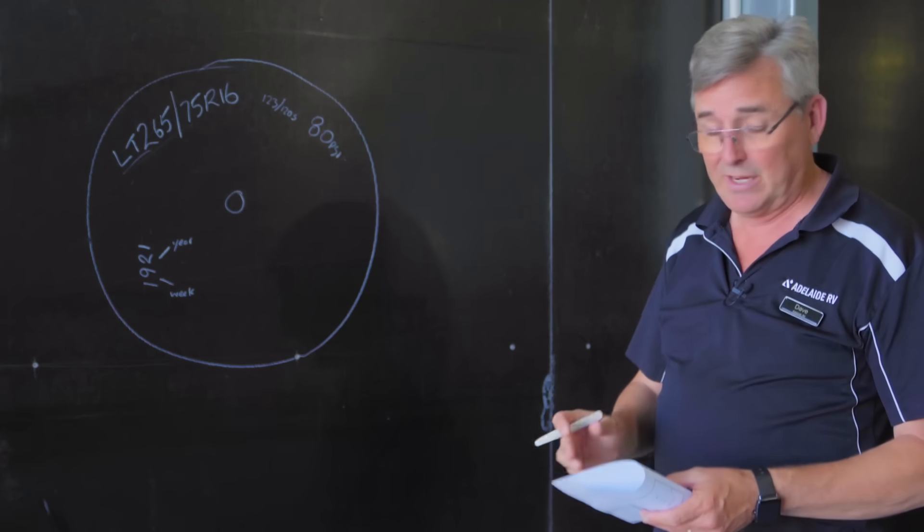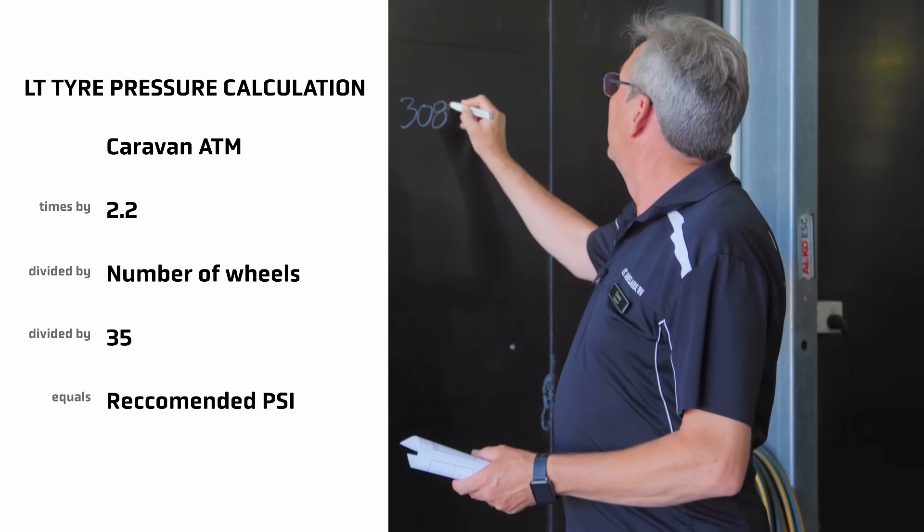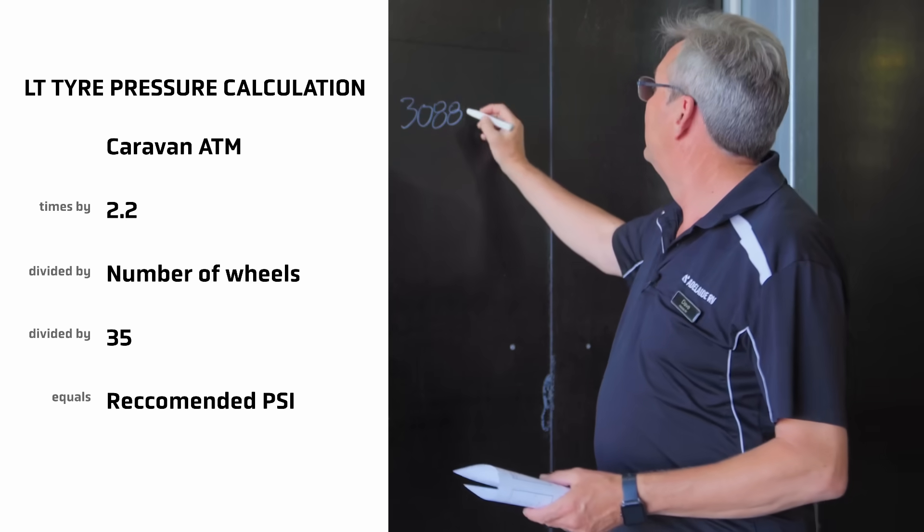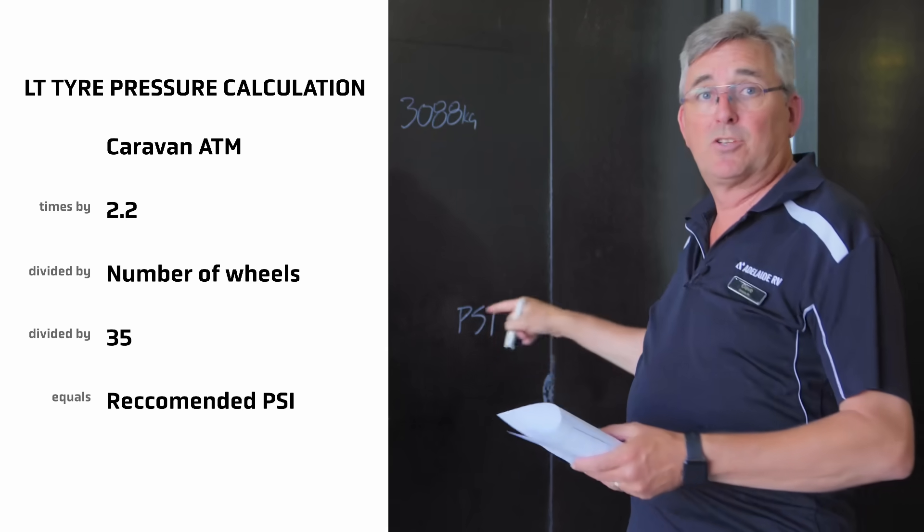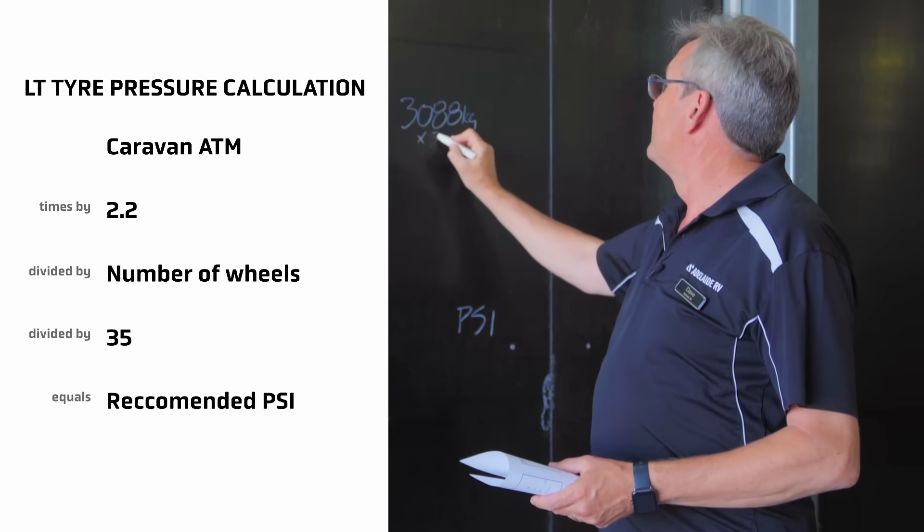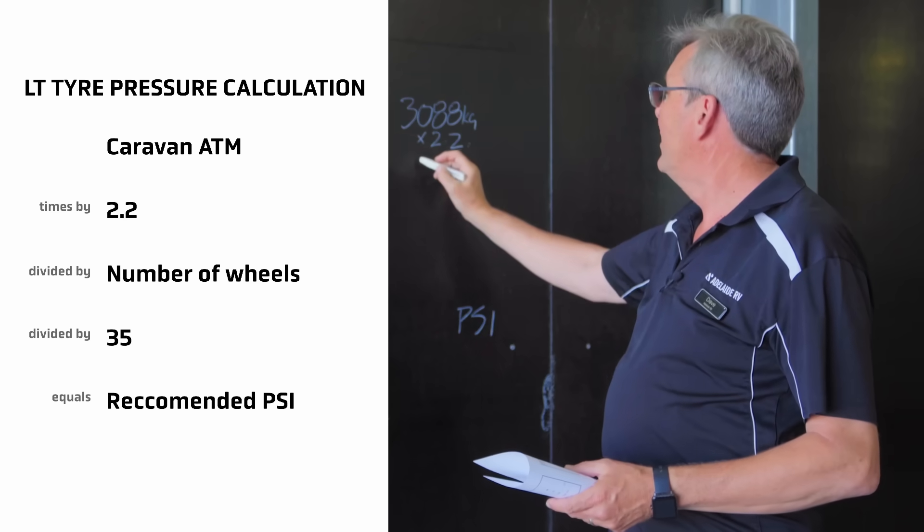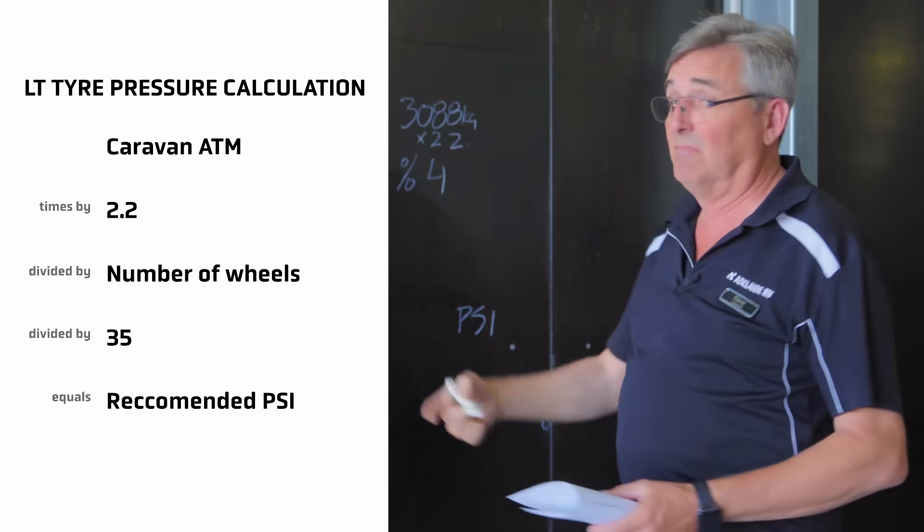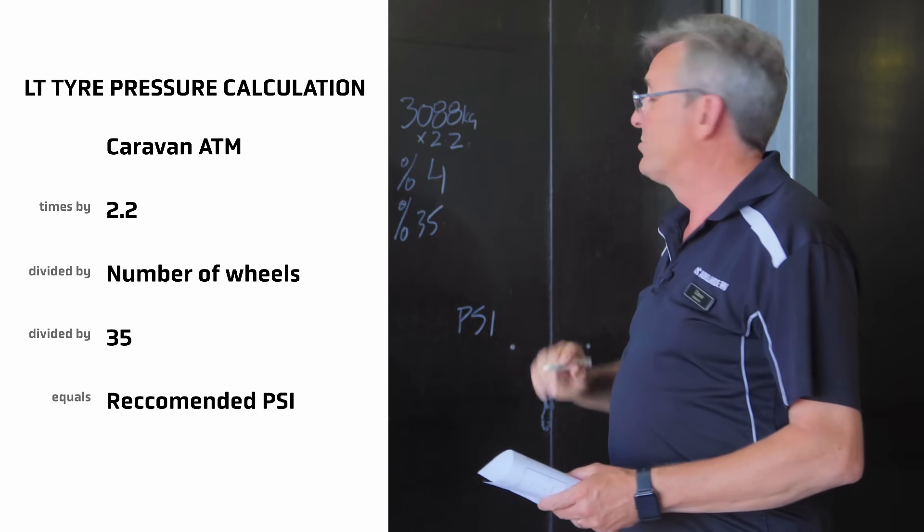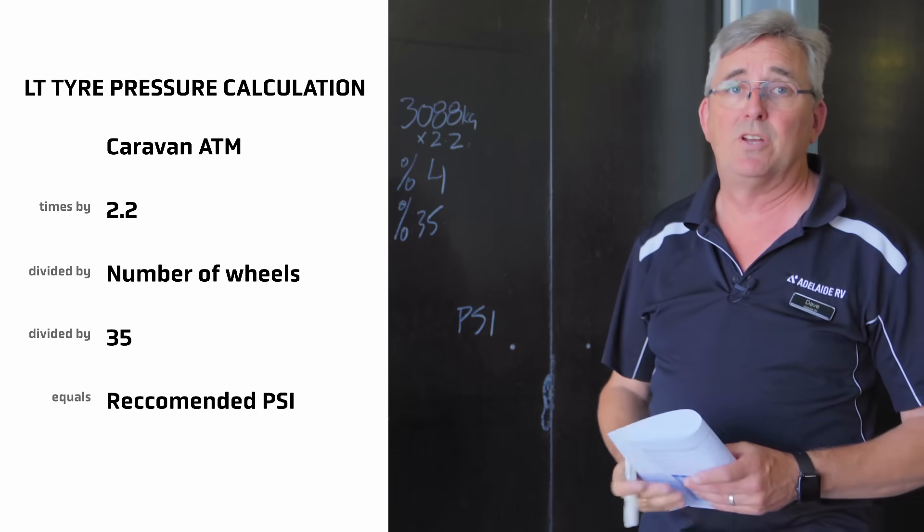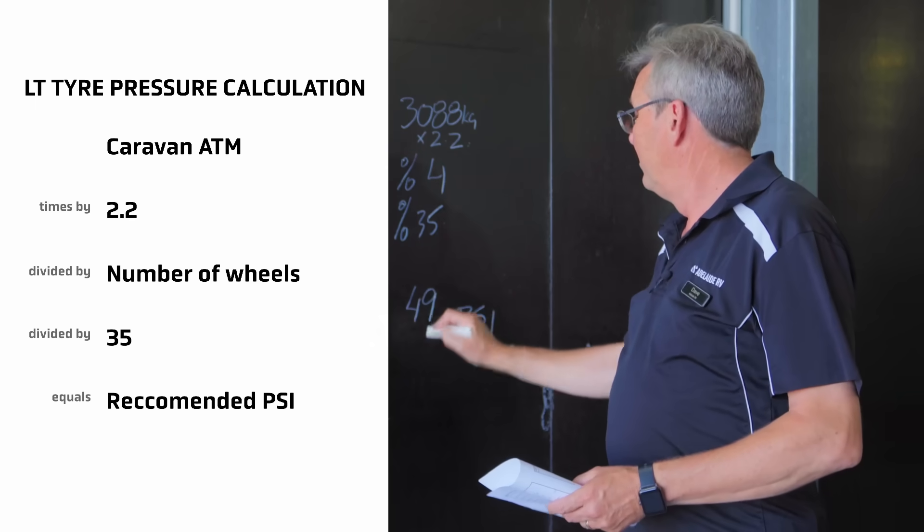So for the light truck tyres, the calculation is reasonably simple. You get your van weight, and we'll use the ATM of 3,088 kilos. But of course, psi, which is what we're going to put into it, is pounds per square inch. So we times that by 2.2 to get it into pounds. I'm not going to do the math in my head, I'm not that good. We then divide it by the amount of wheels, four. We then divide it by the industry standard of 35 square inches, which is per tyre's footprint. And that would come out at 49 psi.